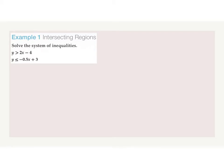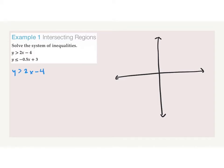So this brings us to our first example — we need to solve the system of inequalities. All of these equations are in slope-intercept form, so we first graph our y-intercept, then do the slope, one equation at a time. The first equation is y > 2x − 4. What is our y-intercept? Negative 4, so the graph crosses the y-axis at negative 4. What's our slope? 2, or 2 over 1 — rise over run.